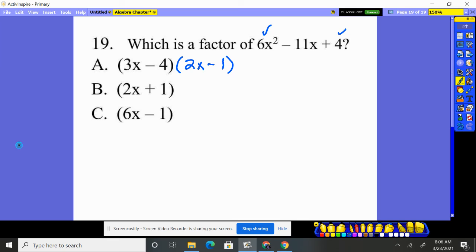Now we have to check, hey, do the inners and outers put together give me this? That's the key. Let's see. This gives me negative 8x. This gives me negative 3x. Together that's negative 11x. We win. Yes. This is a factor of it as is 2x minus one.